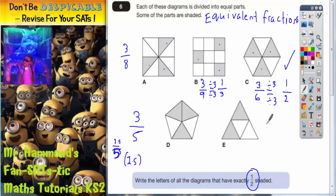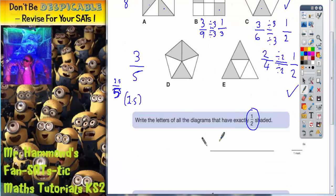E has got 4 pieces, and 2 of them are shaded so it's 2 out of a possible 4. Now both 2 and 4 will divide by 2, so we can make an equivalent fraction. So 2s into 2 goes once and 2s into 4 goes twice. So 2 quarters is the same as a half. So we can also tick shape E. So the two letters that work to have exactly a half shaded are C and E. So that's what we need to write on this answer space here. It's C and E.